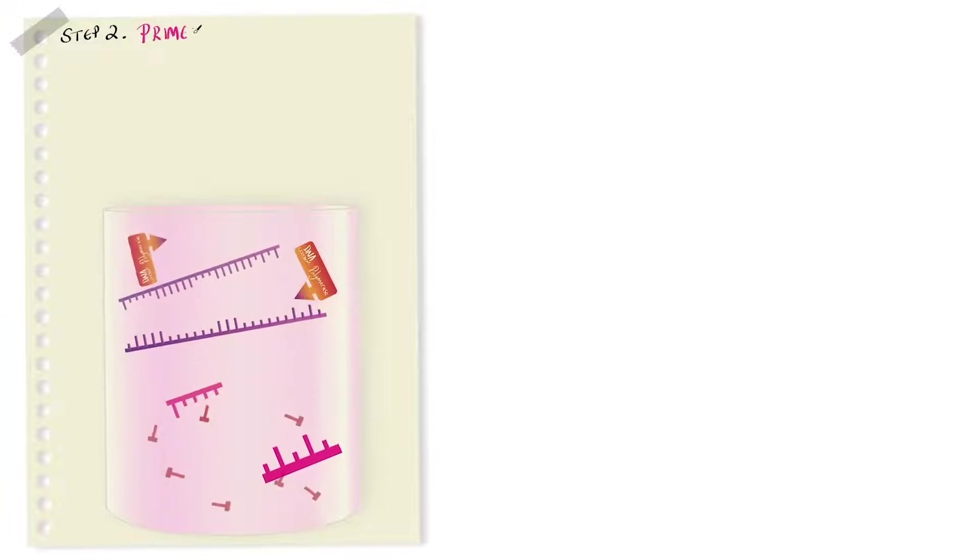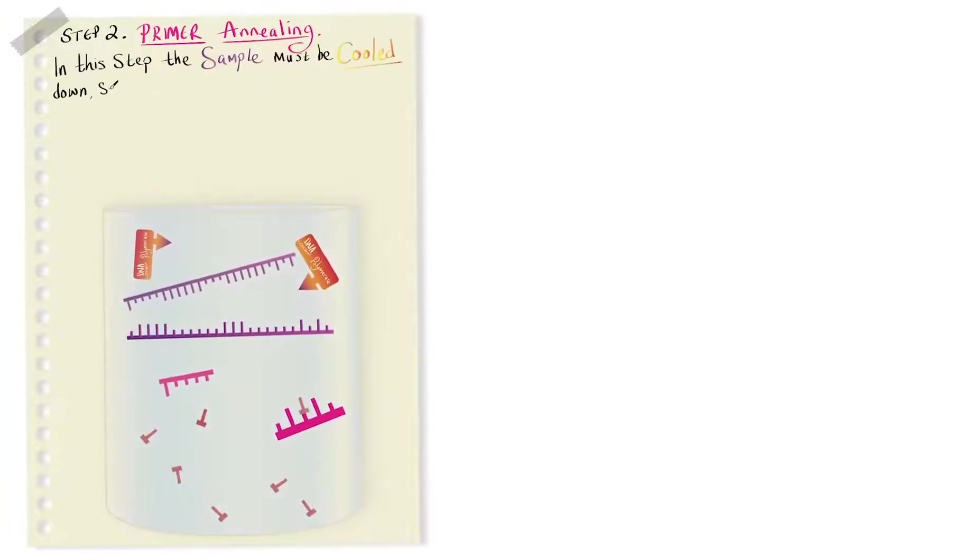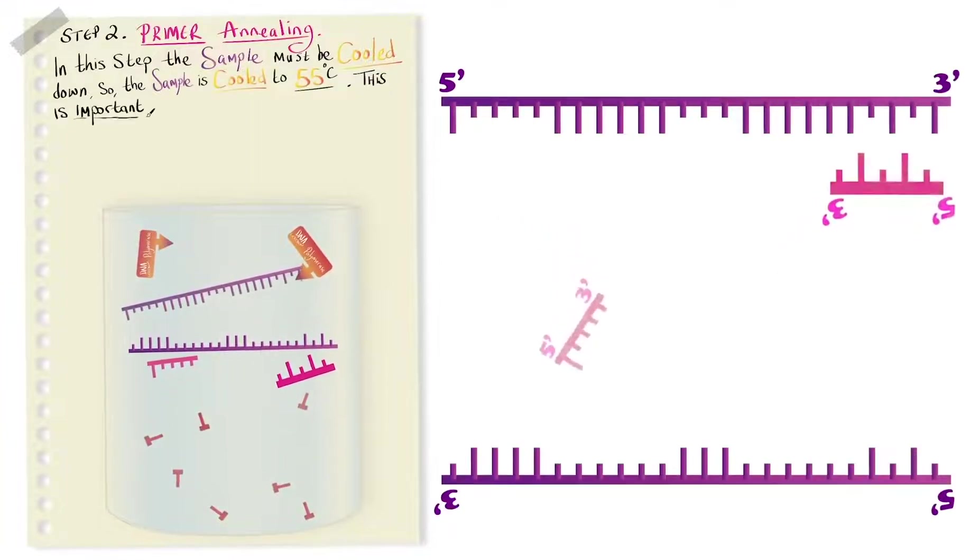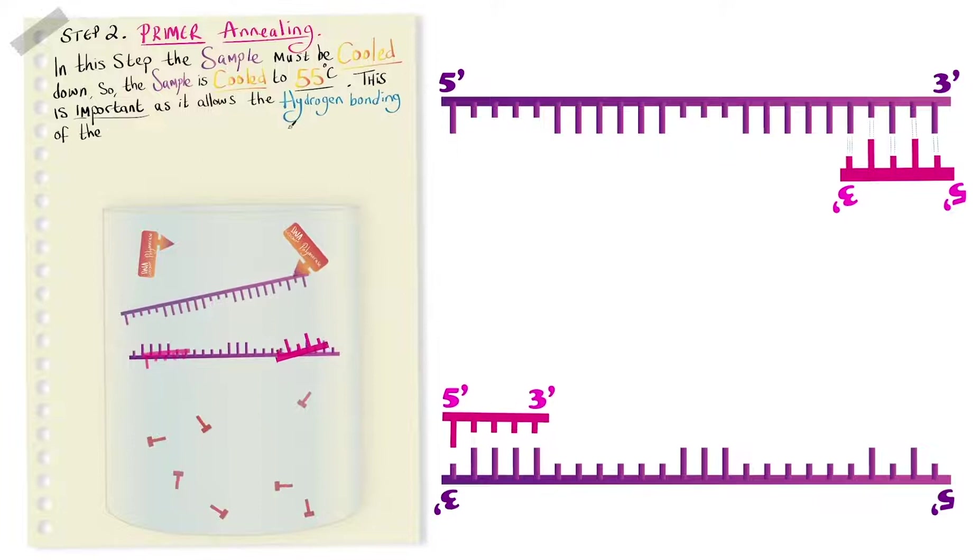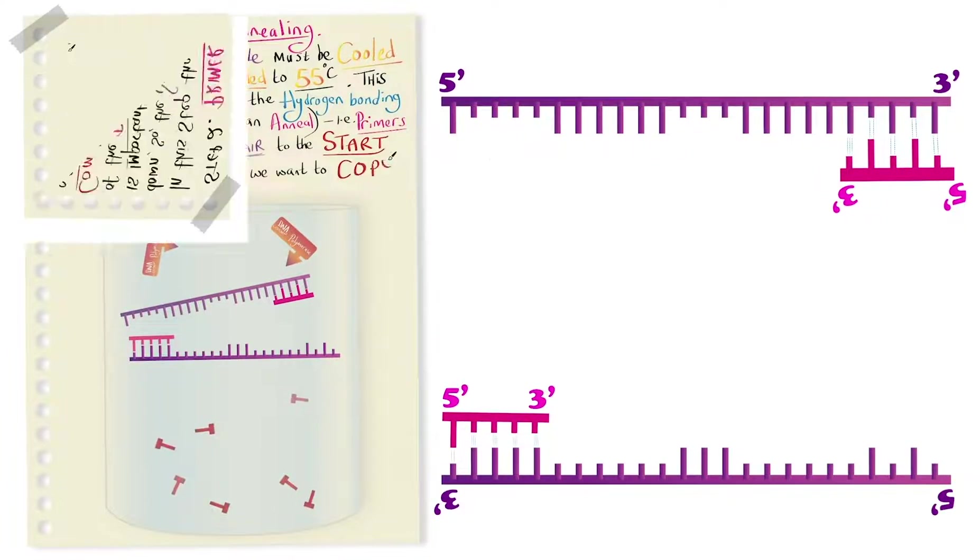Step two is primer annealing and in this step the sample must be cooled down so the sample is cooled to 55 degrees C. This is important as it allows the hydrogen bonding of the primers so they can anneal, i.e. primers will complementary base pair to the start of the DNA sequence we want to copy.